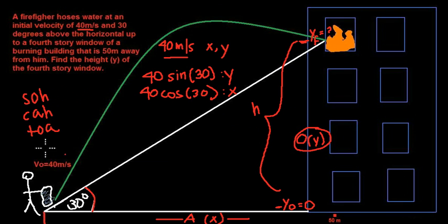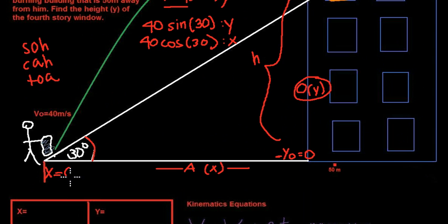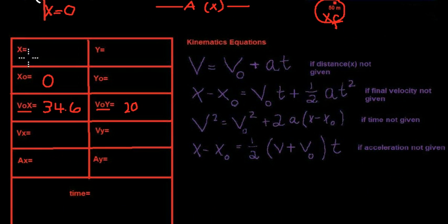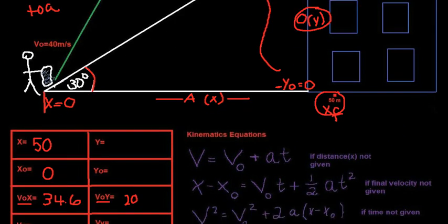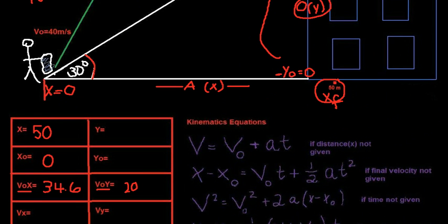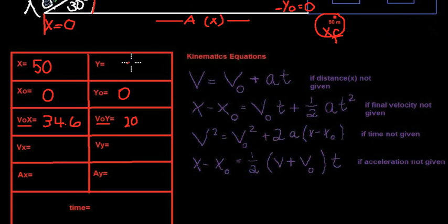The firefighter is 50 meters away from the building, so our initial x position is 0 and our final x equals 50 meters. Similarly, our initial y is 0 because we're starting at ground level, and what we're trying to solve for is the final height y — that's something we don't know yet.